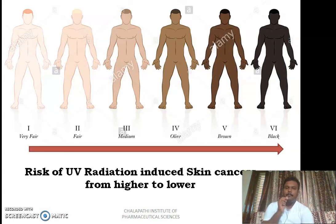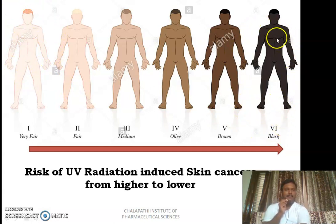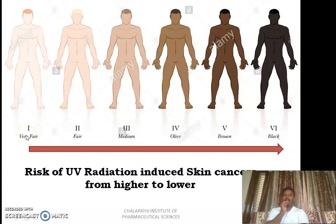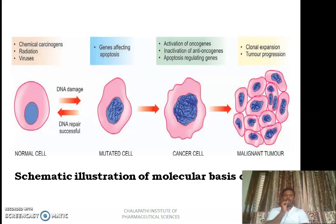In this picture, you can see the people who are at great risk of developing skin cancers due to UV radiation as well as those who are at less risk. The first person, who is very fair, lacks melanin pigmentation in his skin and is therefore at high risk. The last person, who is dark, has a greater amount of melanin pigmentation and will be at less risk of developing skin cancers due to UV radiation. This picture depicts the risk of UV radiation induced skin cancer from higher to lower, and was already discussed in our previous session on chemical carcinogenesis.